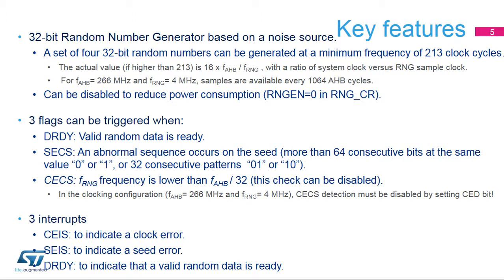The rule of thumb is the lower the RNG clock, the better the entropy for the sampled random source. The Data Ready flag is set in the status register when a set of new random data is ready and validated. It must always be used.